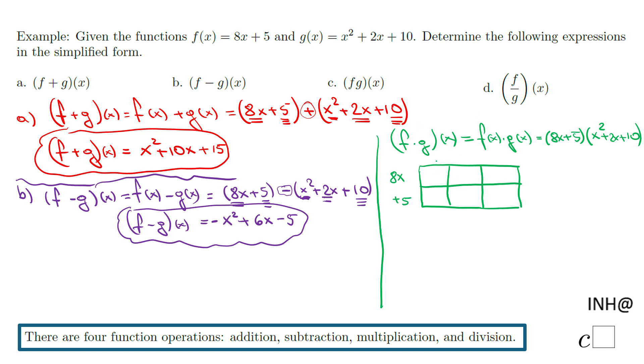What do we have here? When you multiply 8x times x squared is 8x cubed, so we fill in the box. 8x times 2x that will be 16x squared. 8x times 10 that will be 80x.